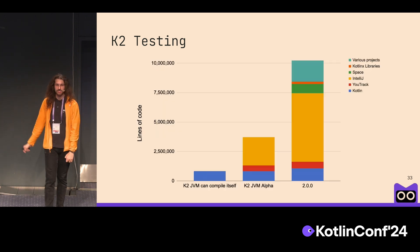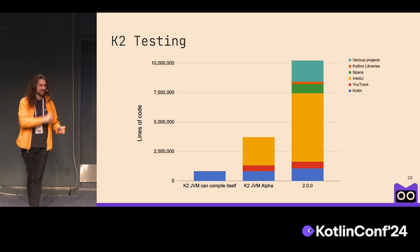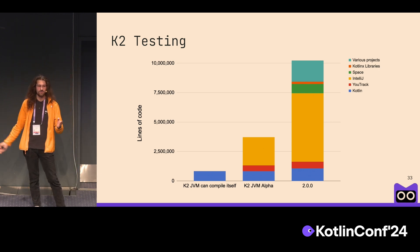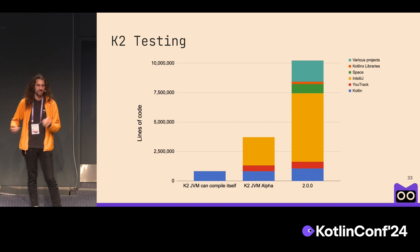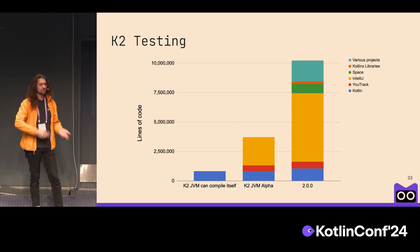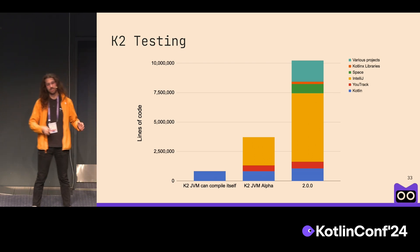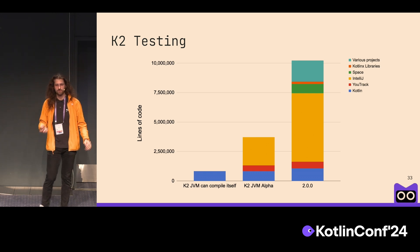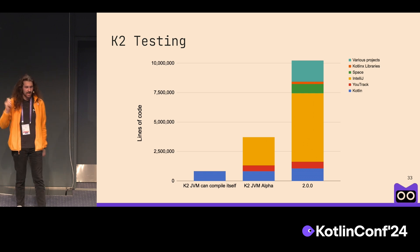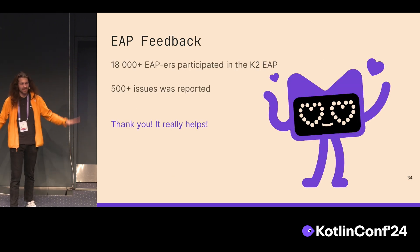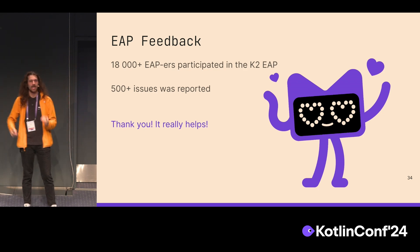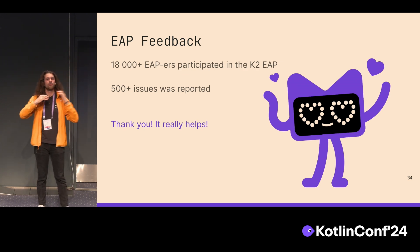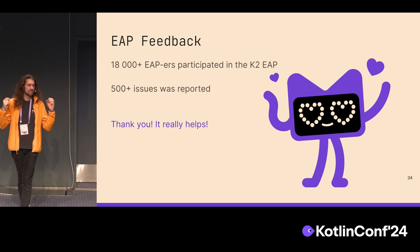But it's not enough. Throughout the project, we were increasing the amount of projects that we routinely test K2 on. We took some internal projects, some public projects — as Igor mentioned in the keynote — and routinely tested K2 on more than 10 million lines of code, commit by commit. And that's still not enough, which is why we had our EAP program early and involved a lot of people. I really want to say thank you for participating in the K2 early access program, because it really helps.